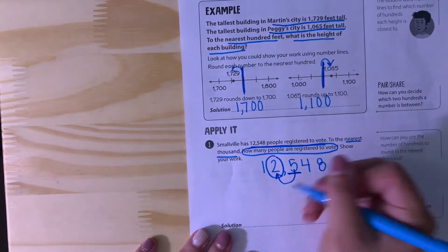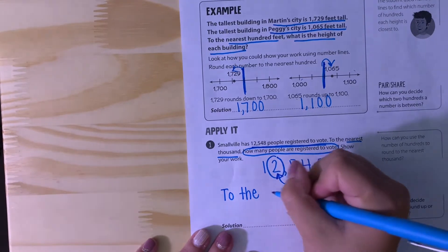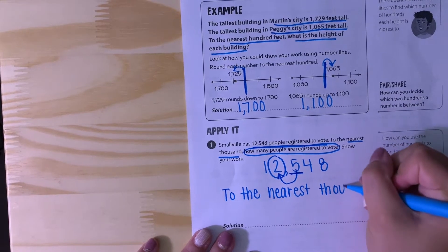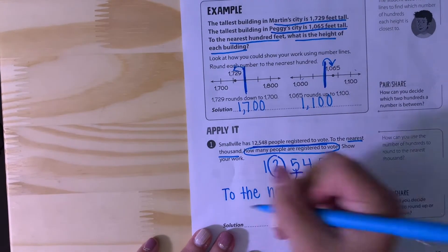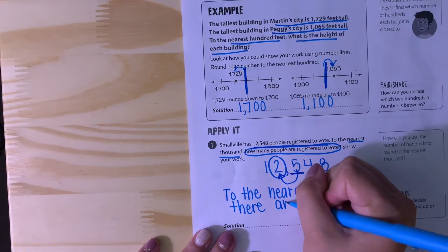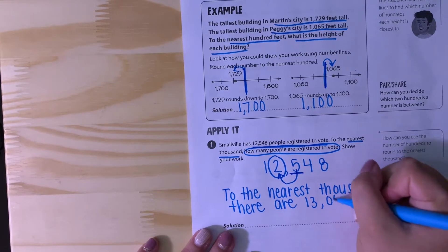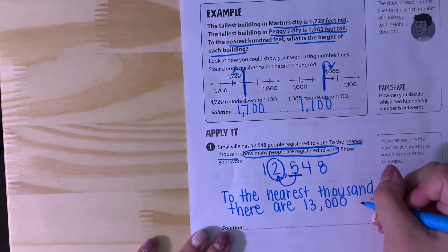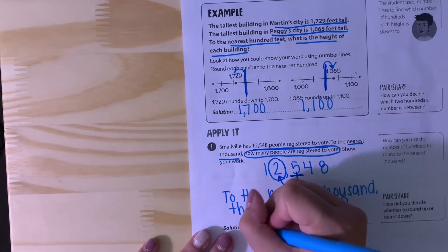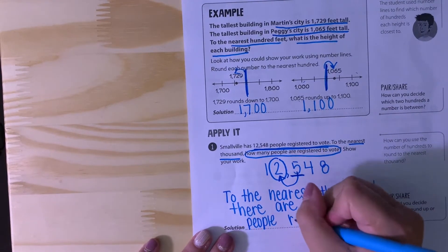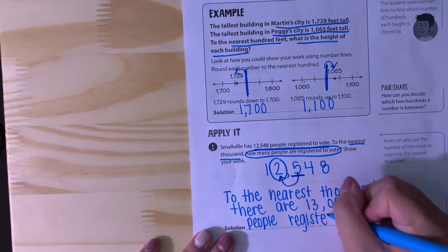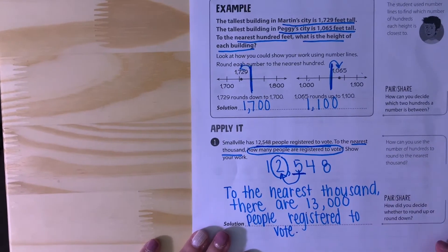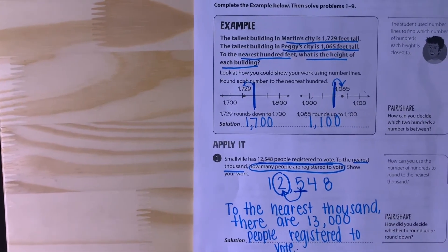So that means to the nearest thousand, there are about 13,000 people registered to vote. Remember, everything after that place value circle turns into a zero. So if that trick helps you, let me know. We'll continue doing that probably into tomorrow as well.